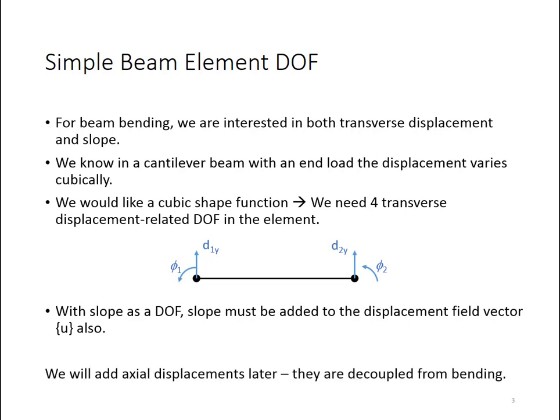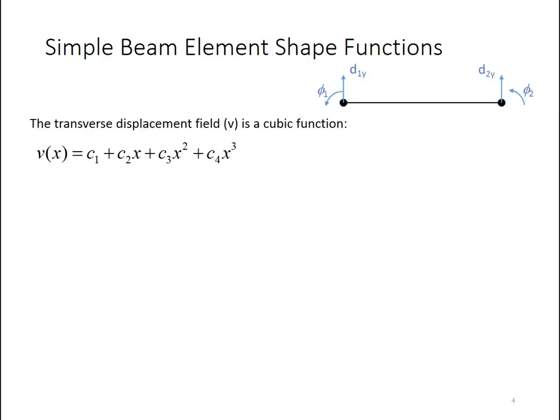So finally, this is what I'm calling a simple beam element. It does not resist axial loading, and that's because axial load is decoupled from the bending. So we will consider it, but we'll basically consider it by overlaying the bar element that was previously developed right on top of the formulation for the beam. We're going to do that at the end of the beam development. Alright, that's enough background. Let's get into the guts of this.